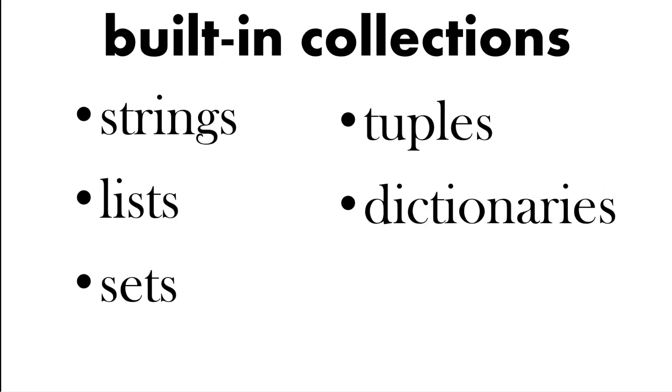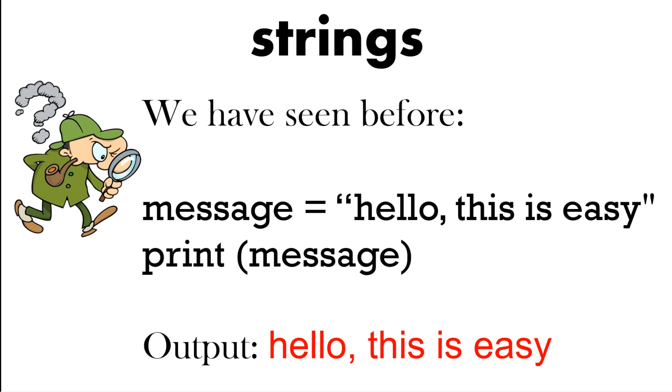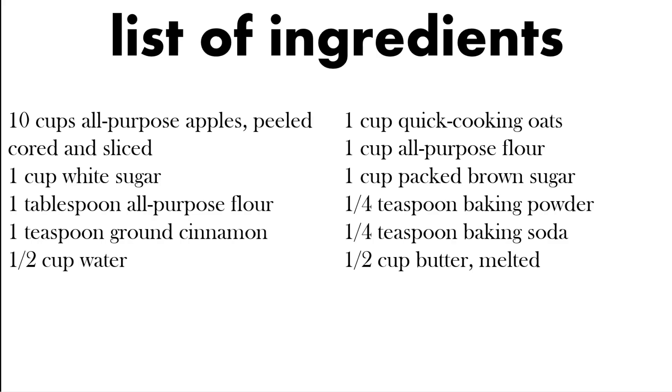Things like strings and lists, we've also mentioned dictionaries and sets and tuples. So strings you would think of normal text, that would be a string. A list, the same as in real life, a list which really is a collection of items.